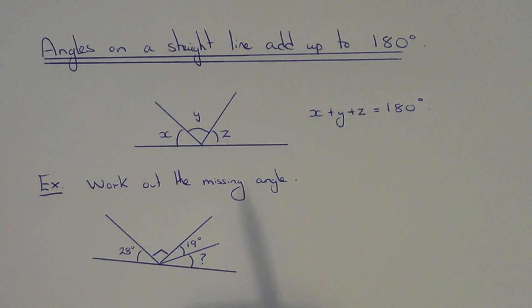The first thing you need to do to find this missing angle is to add up the angles which you already have in the diagram.